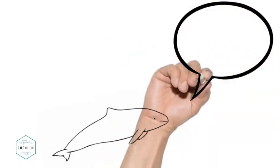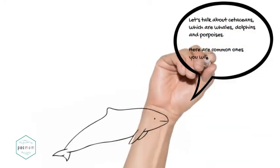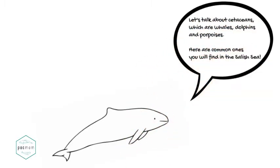First we are going to talk about the group called cetaceans. This includes whales, dolphins, and porpoises. We have some of each in the Salish Sea. Let's meet them!